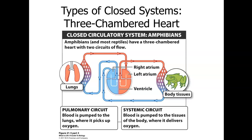This type of circulatory system has two named circuits: the pulmonary circuit, where blood is pumped to the lungs to pick up oxygen, and the systemic circuit, where blood is pumped to the tissues of the body to deliver oxygen.